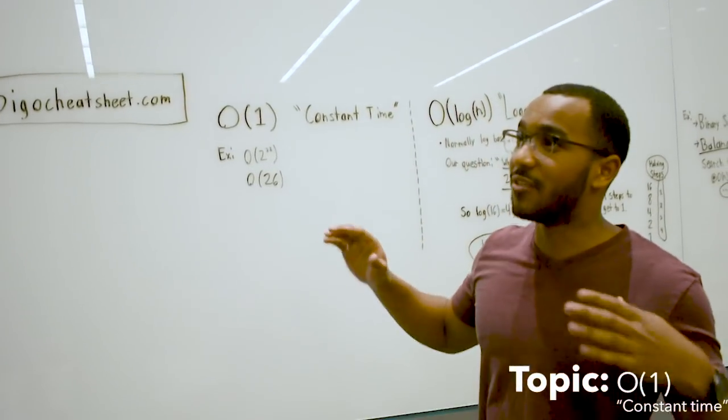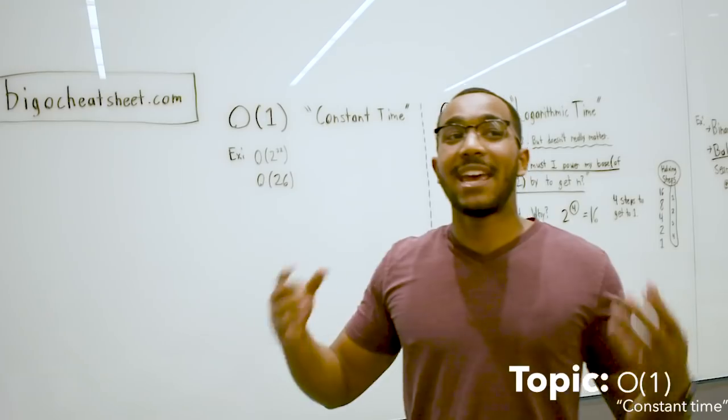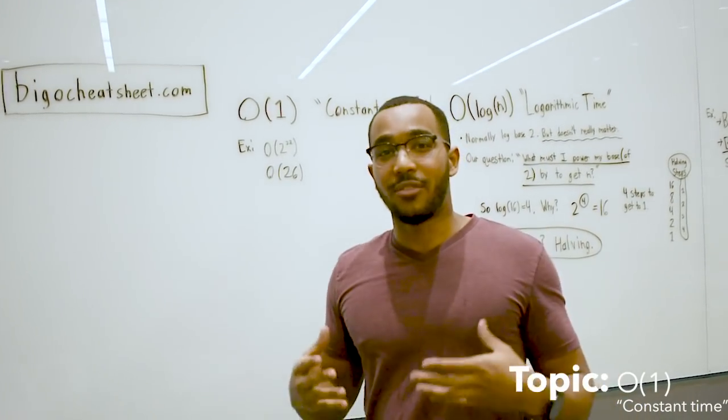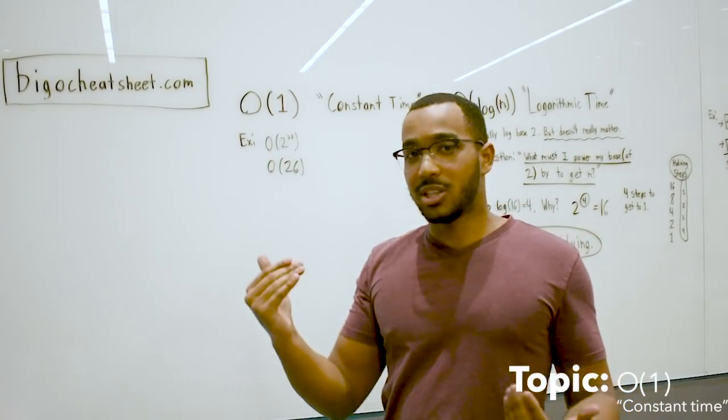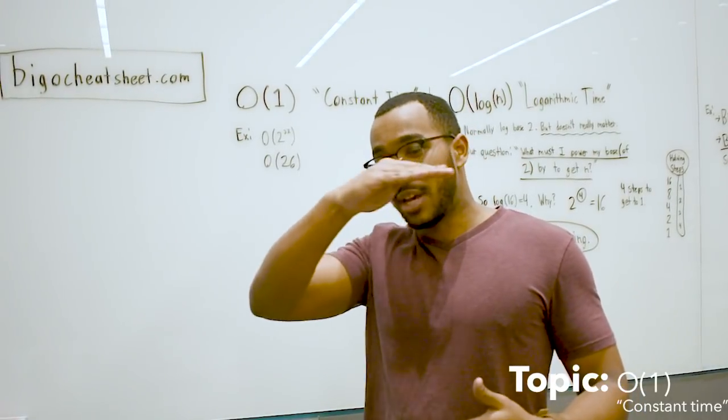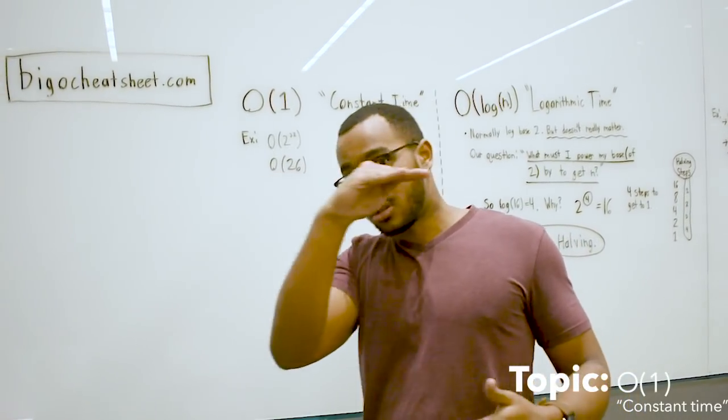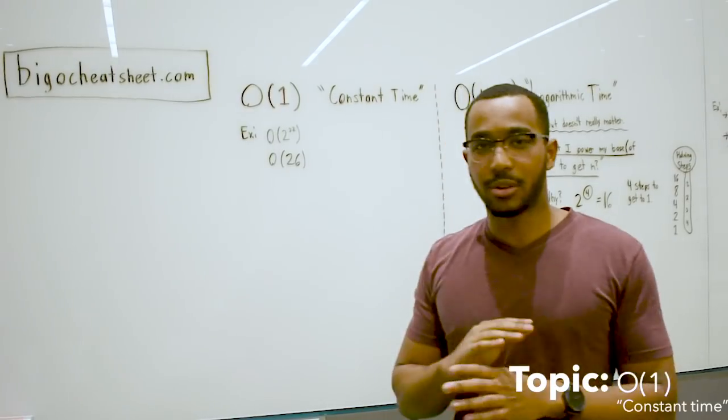What we're worried about when we think of big O is tail behavior, the form of a graph, the way something scales. What constant time looks like is as input gets bigger, that line stays level. The runtime of the algorithm does not change.